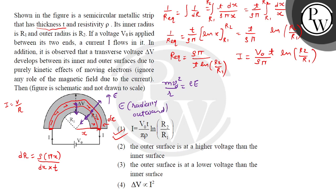So E is always radially outward. With E radially outward, positive charge accumulates at the outer surface and negative charge accumulates at the inner surface. Since potential decreases in the direction of the electric field (radially outward), the inner surface is at higher potential than the outer surface. So the inner surface potential is greater than the outer surface potential. This confirms option number two.